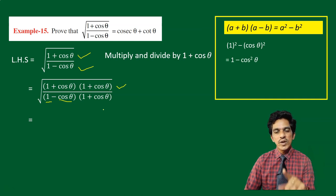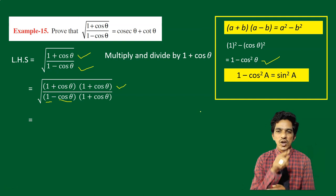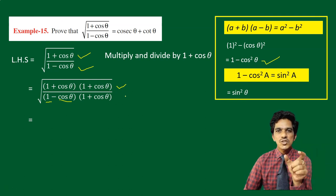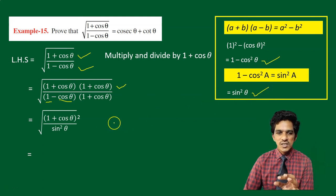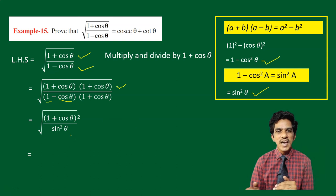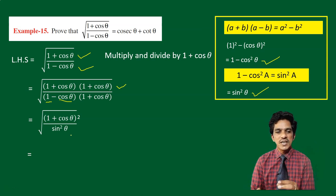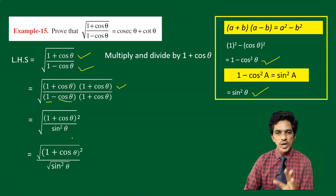Using the identity sin square theta plus cos square theta equals 1, we know that 1 minus cos square theta equals sin square theta. So the denominator becomes sin square theta. Now we have the square root of 1 plus cos theta whole square divided by sin square theta. We can apply the square root to both numerator and denominator separately: square root of 1 plus cos theta whole square is 1 plus cos theta, and square root of sin square theta is sin theta.